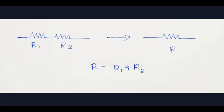Now we have R1 and R2 — two resistances. This is the effective resistance. How do we connect them in series? R1 and R2 are two resistances. How much effective resistance can we get? The effective resistance is R1 plus R2.